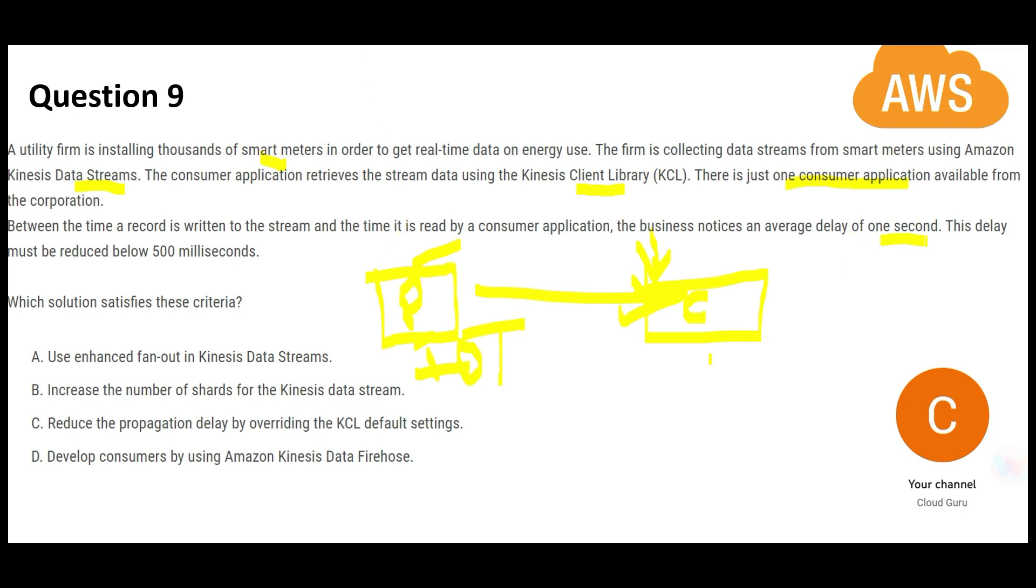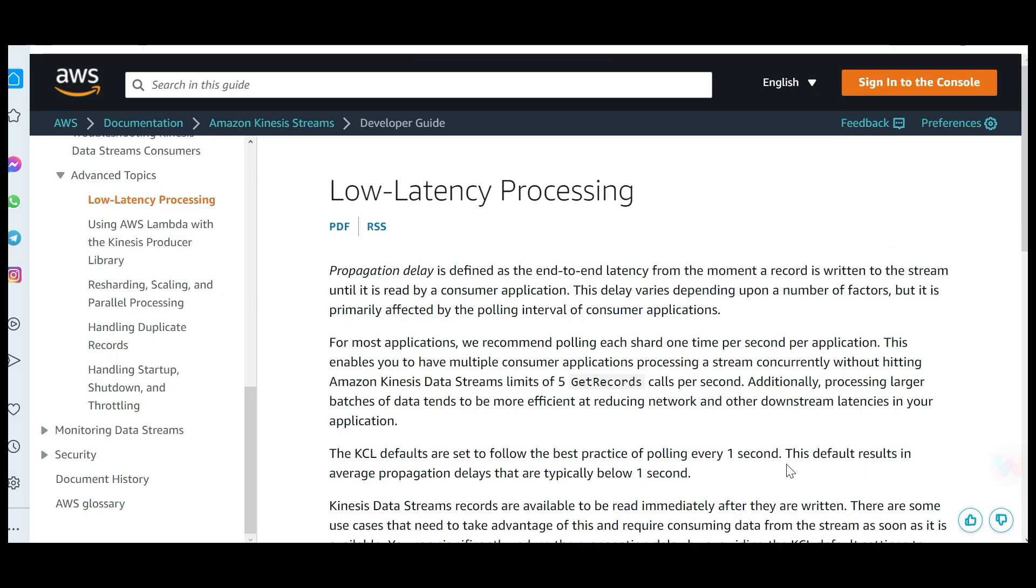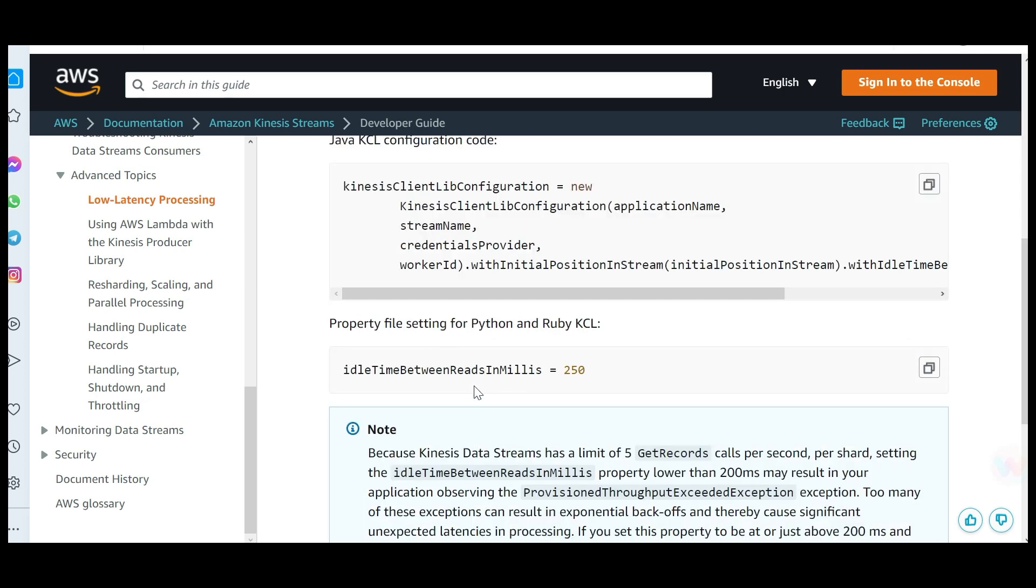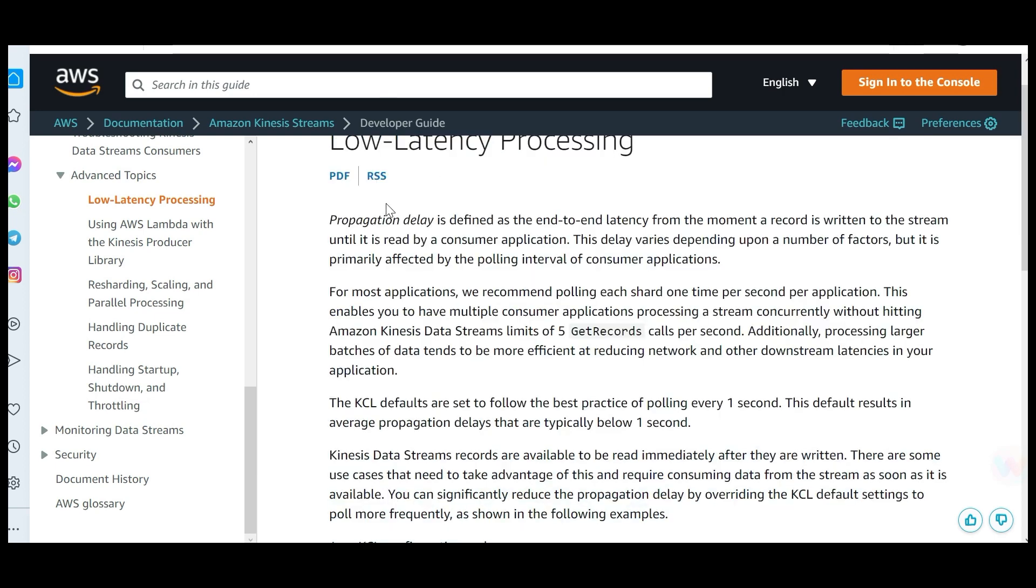Now there is a delay of one second—producer sending the data and consumer receiving the data. There is a delay of one second; it has to be brought down to 500 milliseconds. First one says use enhanced fan-out in data streams. See, the KCL default is set to poll after every one second, and that is why we are seeing the delay of one second. So we will have to change the default property. In order to change it, we have to change the average propagation delay, typically below one second.